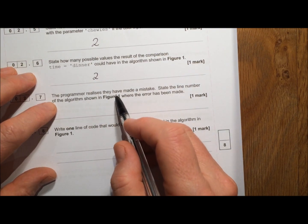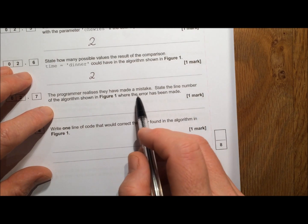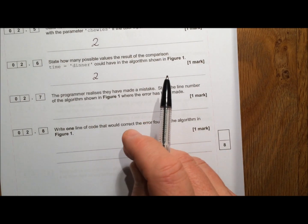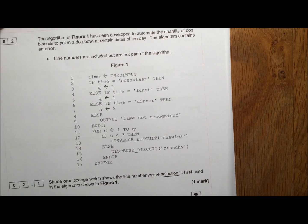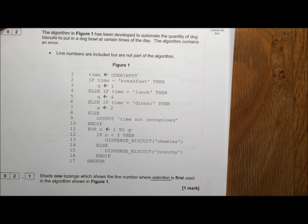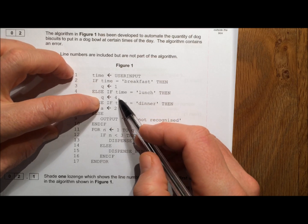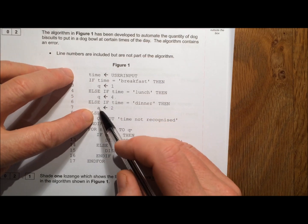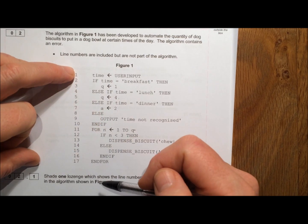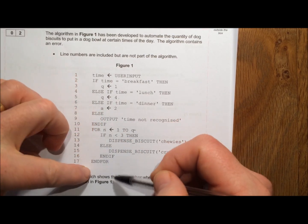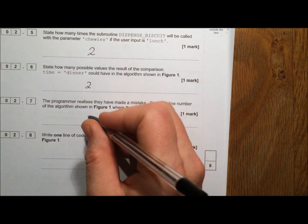The programmer realizes they have made a mistake. State the line number of the algorithm shown where the error has been made. When we were looking through it earlier, it's always a good idea to have a quick look through to try and work out what the algorithm is actually trying to achieve. So when we looked through we said Q is assigned the value 1 or Q is assigned the value 4, and suddenly this variable A came out of nowhere. A is assigned the value 2. Well that's ridiculous because A is never used again. So the error is in line 7.